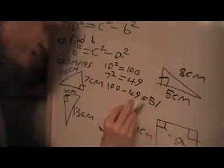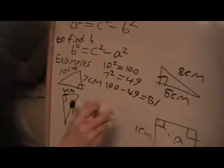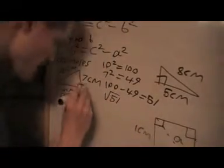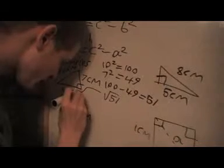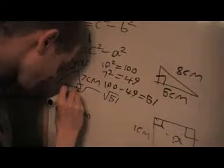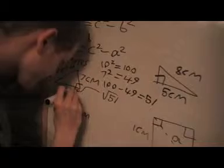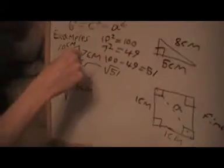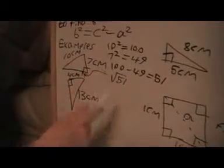But remember, this is given as squared. So, then we need to take the square root of 51. So, that's this length here. Let me just narrow it to show you which side I mean.